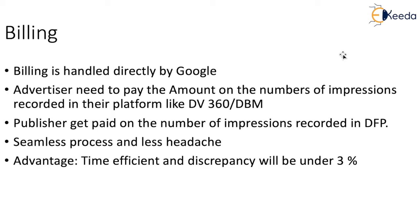The publisher will not have to reach out to the advertiser for payments or follow up with them — this happens seamlessly with less headache for both parties. The advertiser only pays for impressions recorded in their system, and the publisher gets paid for the impressions recorded in DFP. When using programmatic direct, the discrepancy between the buyer's impression number and the publisher's impression number is under 3%, so impression discrepancy will not be significant. If you see a discrepancy of more than 3%, you can reach out to the Google team, who will investigate and provide relevant information about why it happened, and can return your money if applicable.